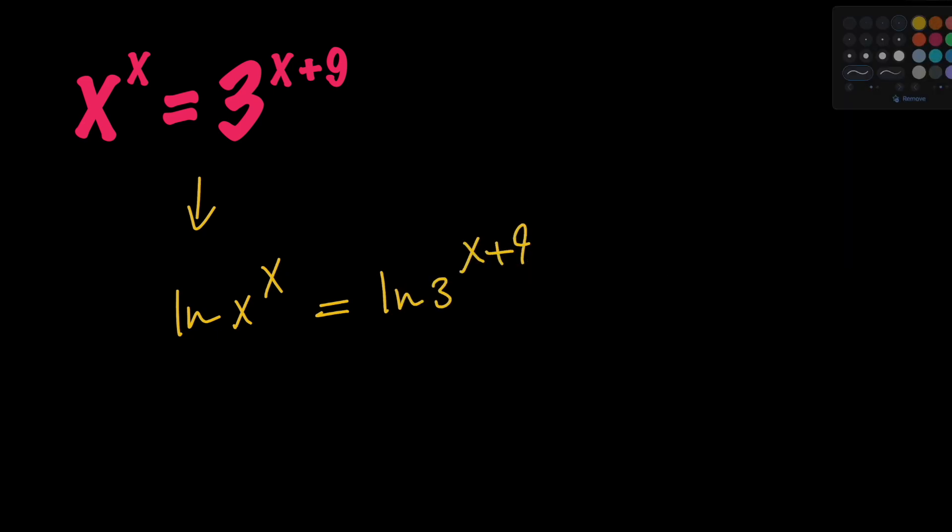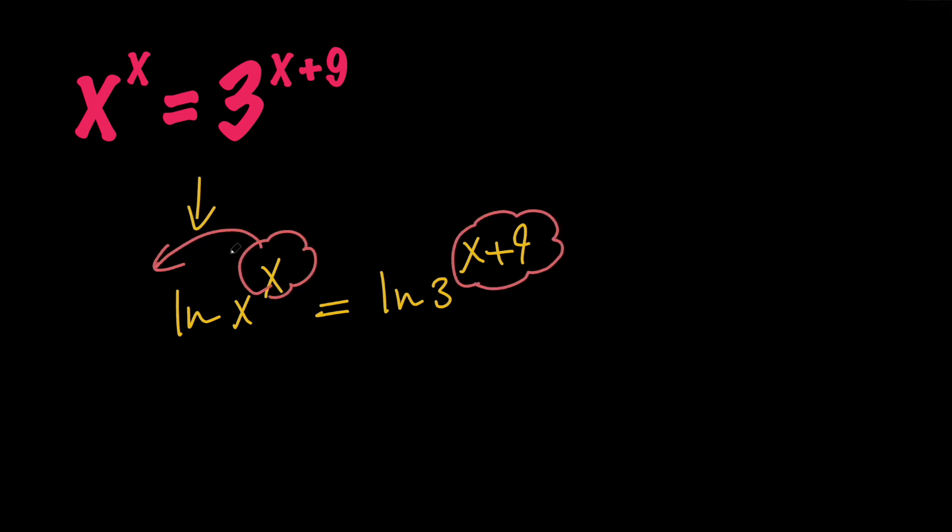Next, based on the power rule, we can take the powers and bring them in front. So we're going to have x lnx equals x plus 9 times ln 3.